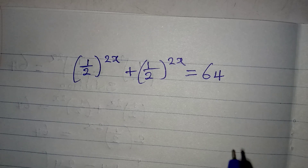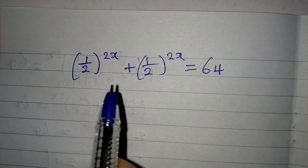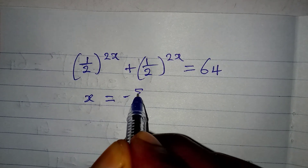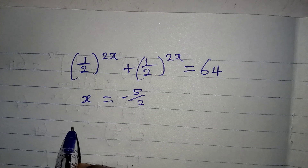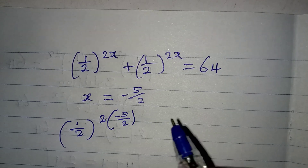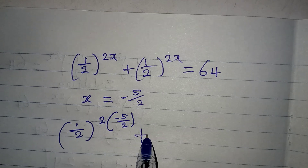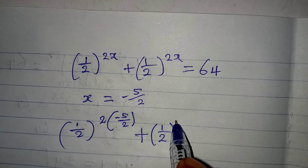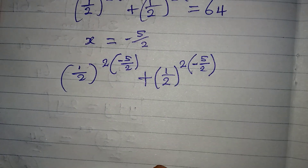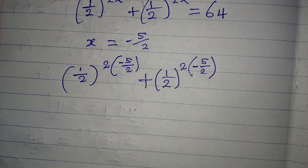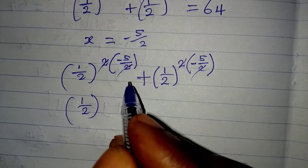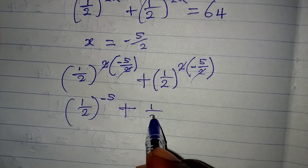We have to check this value, so let's go back to the original equation and substitute x equals minus 5 over 2. We get 1 over 2 to the power of 2 multiplied by negative 5 over 2, plus 1 over 2 to the power of 2 multiplied by negative 5 over 2. The 2s cancel, giving us 1 over 2 to the power of negative 5, plus 1 over 2 to the power of negative 5.